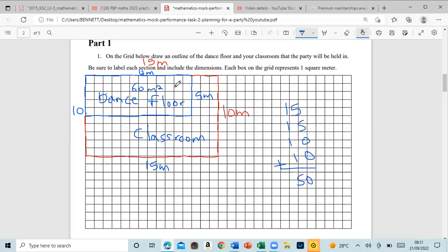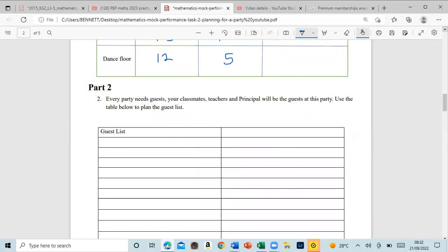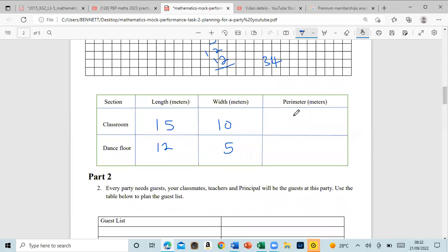Let's check for the dance floor. It is 12 here, so it will be 12 also. Right here is 5, so that's 5 plus 5, and 12 plus 12. Two and two is four, and five. So it's 10 plus 24, which is 34. So the perimeter is 50 for the classroom and 34 for the dance floor.